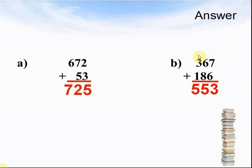And for B the answer was 553, because: 7 plus 6 makes 13, so put the 3 and carry 1; 1 plus 6 plus 8 makes 15, so put the 5 and carry 1; and 1 plus 3 plus 1 makes 5.